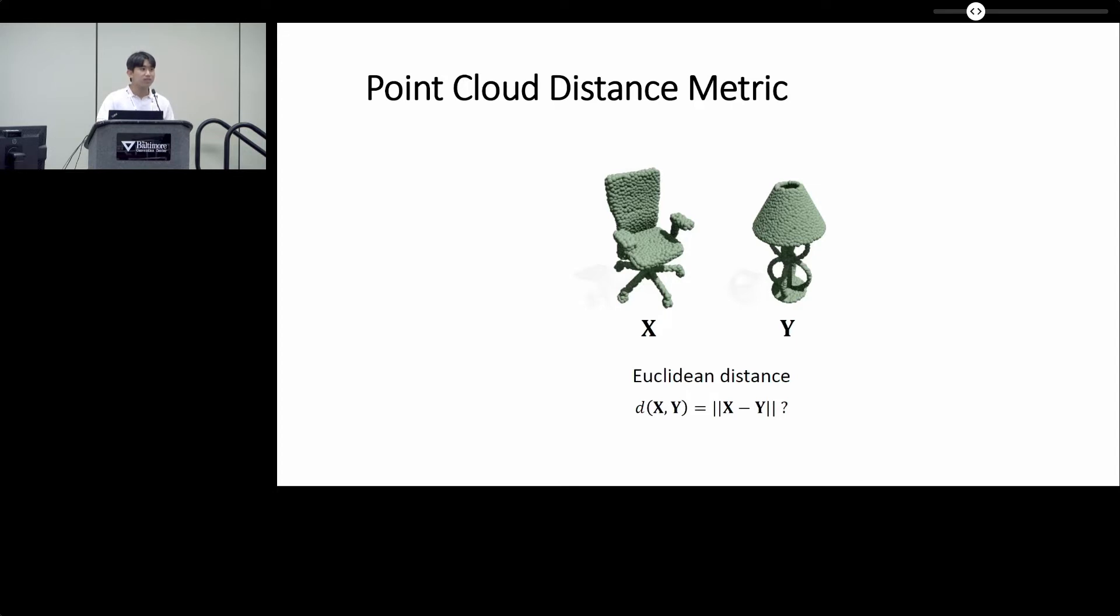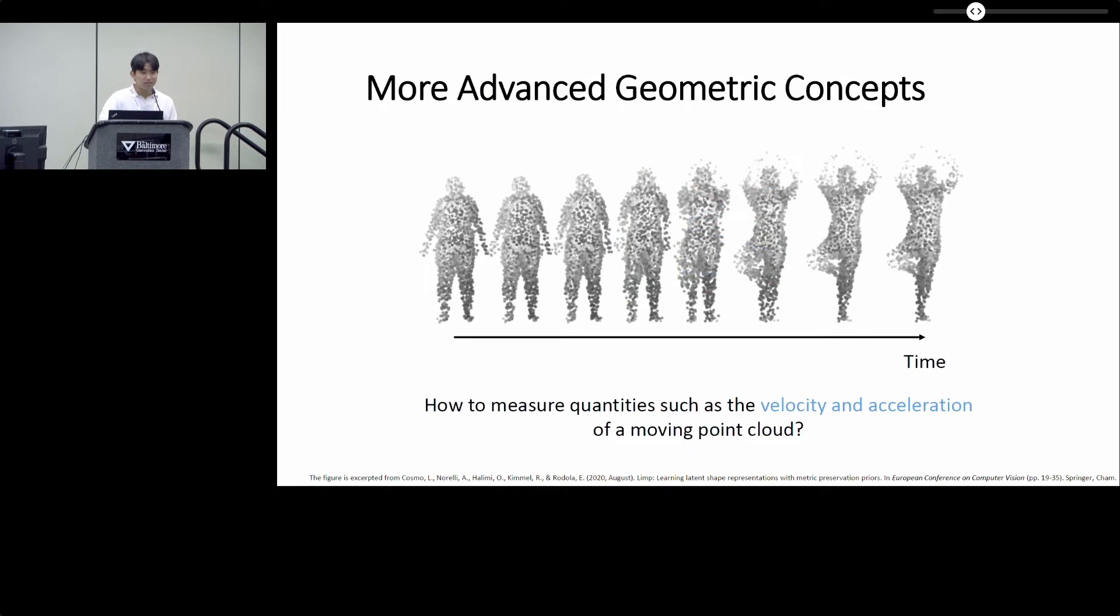One example is the distance computation. When we want to compute the similarity between two point clouds, obviously we cannot use the Euclidean distance metric. Instead, we have to use some set distance metrics, and one example is the Hausdorff distance as shown in the slide. However, the distance metric measures just one aspect of the point cloud data. Other applications may require more advanced geometric concepts and tools.